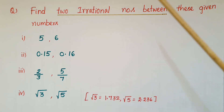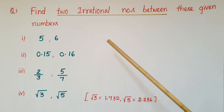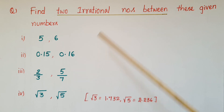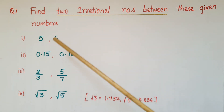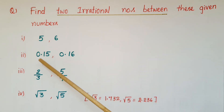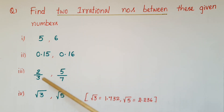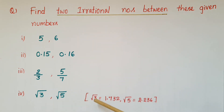Now please find two irrational numbers between the following pairs: first, 5 and 6; second, 0.15 and 0.16; third, 2 by 3 and 5 by 7; and fourth, root 3 and root 5. The values of root 3 and root 5 have been given.